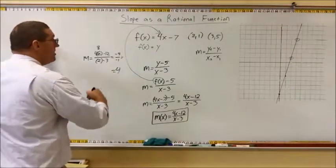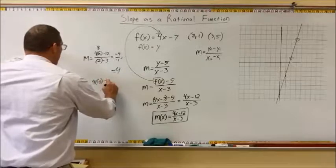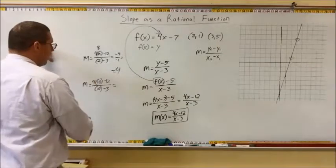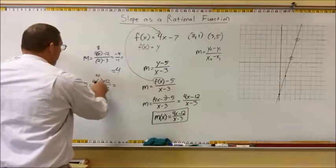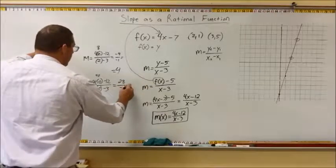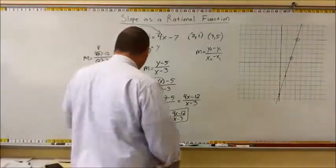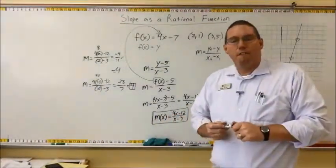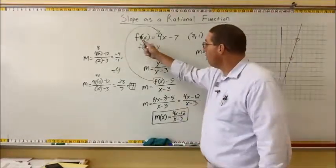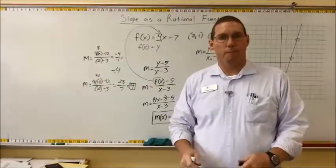We could take now any other point or any other x value for f of x. We could plug in, let's say, 10. And we would have m is equal to 4 times 10 minus 12 all over 10 minus 3. Well, 4 times 10, that's 40. And 40 minus 12, well, that's 28. And 10 minus 3 is 7. And 28 divided by 7 is 4 again. And the reason that we keep getting 4, no matter what, is because the slope of f of x is 4. Because it's a linear function.